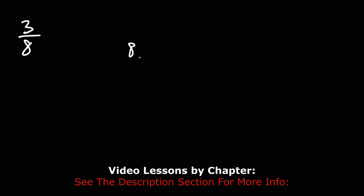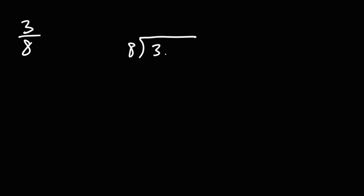Now let's try another example. Let's convert 3 over 8 to a percentage. So let's use long division. Now 8 doesn't go into 3, so we need to add a decimal point and a 0.